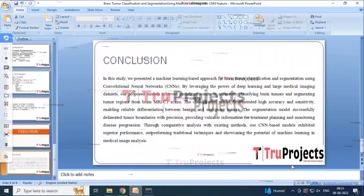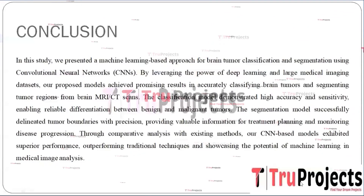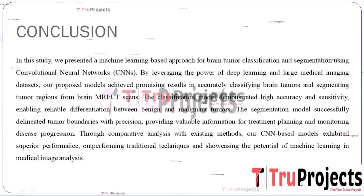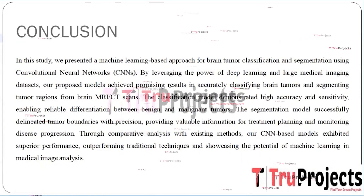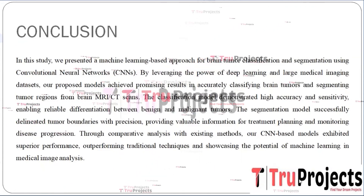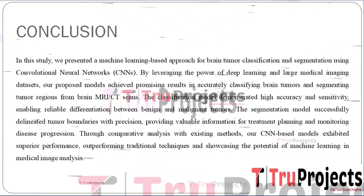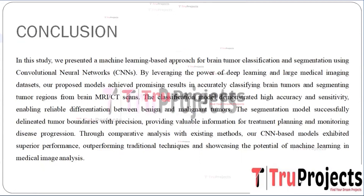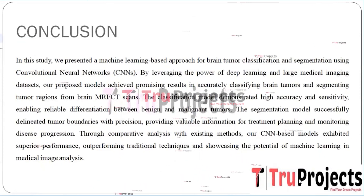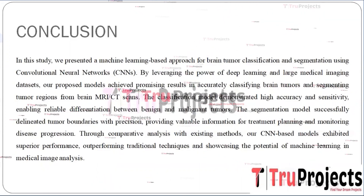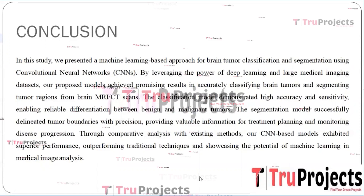In conclusion, our machine learning-based approach for brain tumor classification and segmentation using CNN features, by leveraging deep learning and large medical imaging datasets, achieved promising results in accurately classifying brain tumors and segmenting the tumor region from brain MRI scans. The classification model demonstrated high accuracy and sensitivity, enabling reliable differentiation between tumor types. The segmentation model successfully delineated tumor boundaries with precision, providing valuable information for treatment planning and monitoring disease progression.